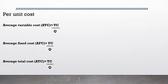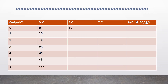We will discuss the shape of each curve and why they take a particular shape in the next tutorial. But let's solve a numerical first. This is a table with output, variable cost, and fixed cost given, and you have to calculate total cost and marginal cost. In marginal cost, you'll notice a small triangle — we call it delta, which in economics refers to change. The formula for marginal cost is change in total cost divided by change in quantity. I expect you to use this table and fill it in using the formulas.